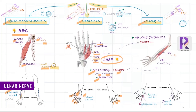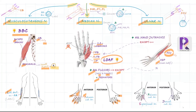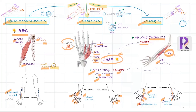Moving on to the ulnar nerve: it also gives no branches in the arm. In the forearm, it innervates the flexor carpi ulnaris and the ulnar half of flexor digitorum profundus — that's one-and-a-half muscles. In the hand, other than the LOAF structures, the deep terminal branch of the ulnar nerve innervates all remaining intrinsics, including the adductor pollicis and occasionally the deep head of flexor pollicis brevis. The palmar and dorsal cutaneous branches are given off about five to six centimeters proximal to the ulnar styloid process, supplying the respective surfaces of the ulnar half of the palm. The volar surface of the ulnar one-and-a-half fingers is supplied by the terminal superficial branches, while their entire dorsal surface is supplied by the dorsal cutaneous branch.